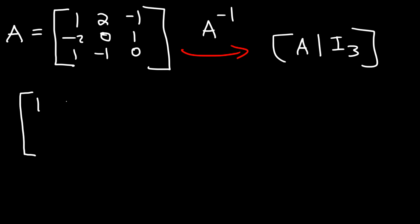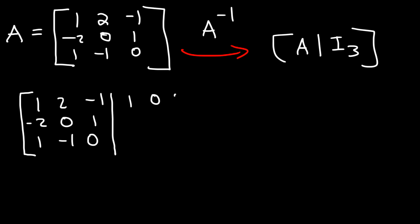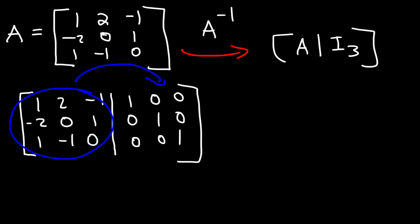Here's matrix A: 1, 2, negative 1, and so forth. The multiplicative identity matrix is going to be 1, 0, 0, 0, 1, 0, 0, 0, 1. Now here's what we need to do: we need to perform elementary row operations and basically take the left side and make it look like the right side. The operations that we apply to the left side, we have to apply to the right side. Whatever the result is on the right side, that is going to be the inverse of matrix A.